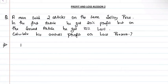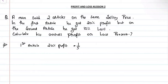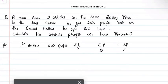For the first article, he got 20% profit. 20% means 20 by 100, so 1 by 5. Let cost price be 5, then selling price is 6 — so he got 20% profit.